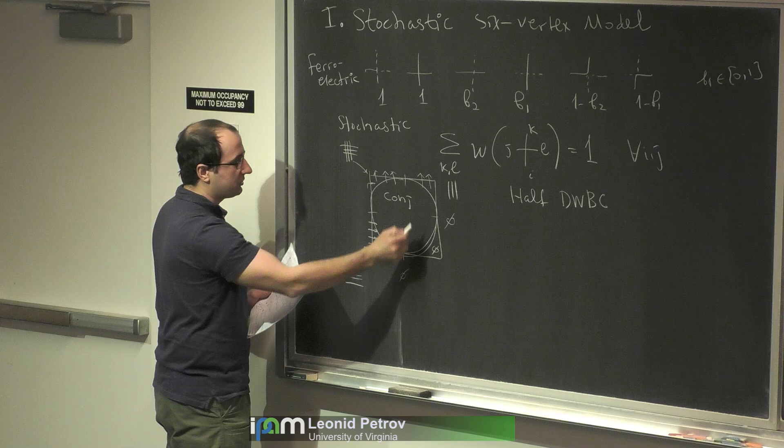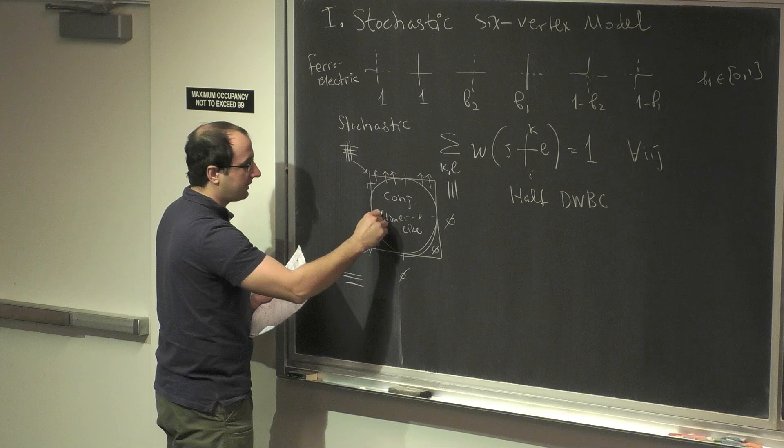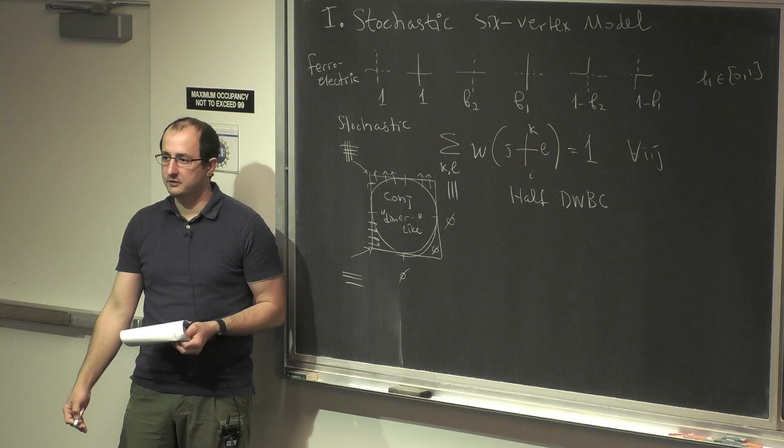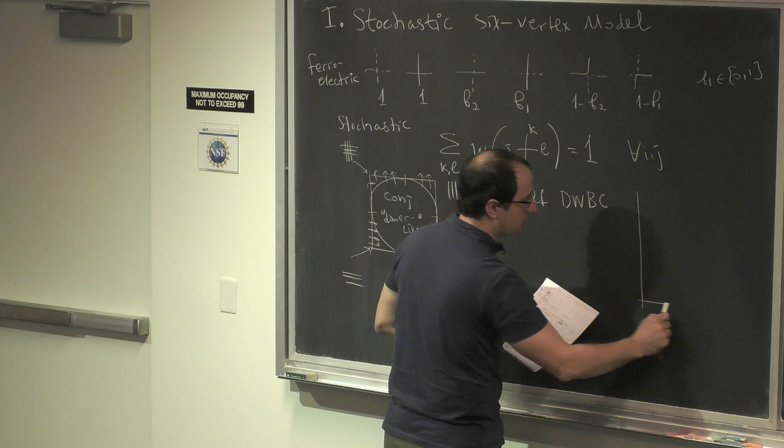Conjecturally, the full domain wall is dimer-like — meaning you sample it and see the same picture as in dimers. It's not a determinantal process, so it's not exactly dimers. But in the half domain wall boundary conditions, you actually have different behavior.